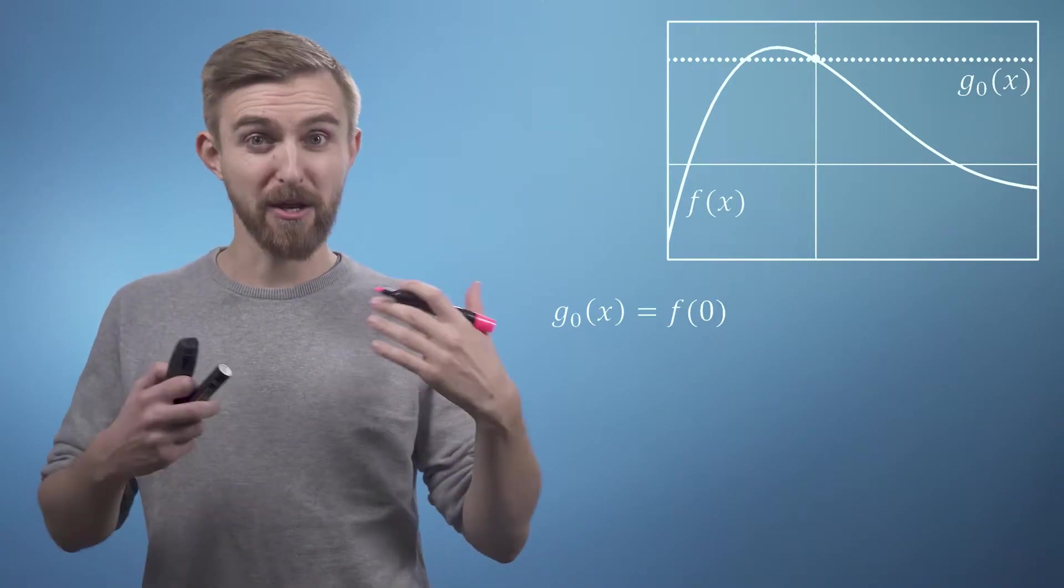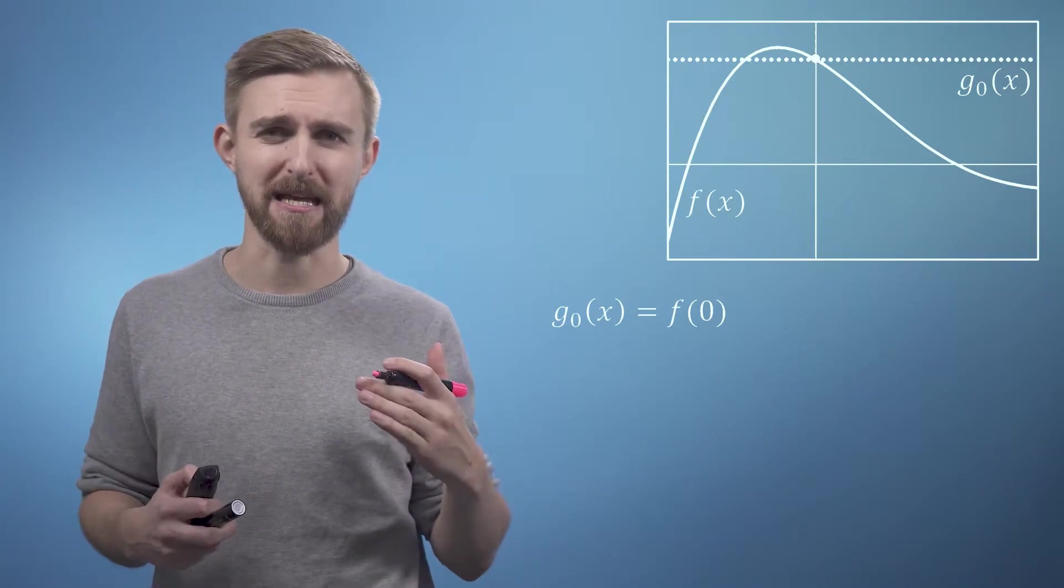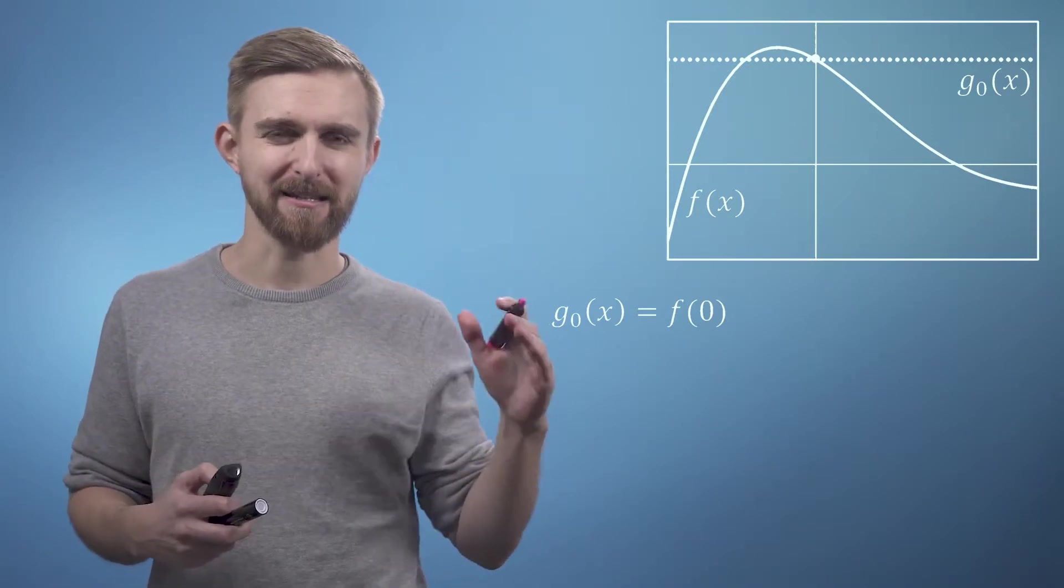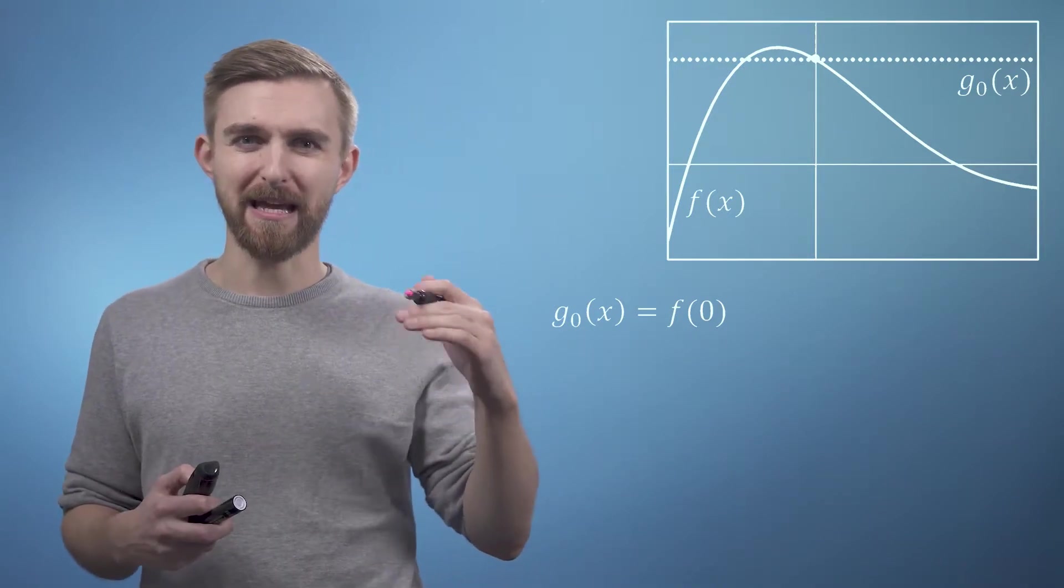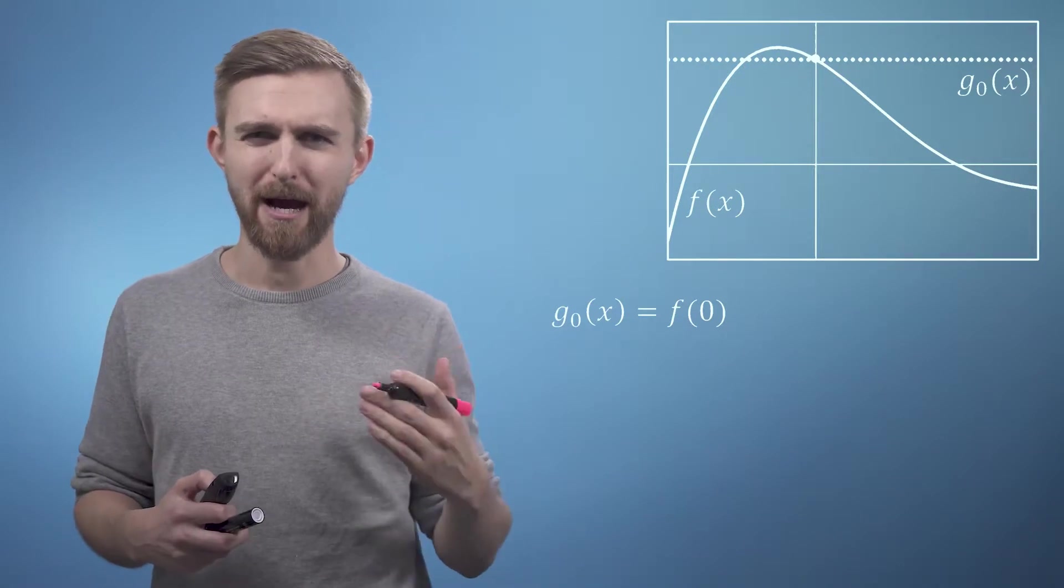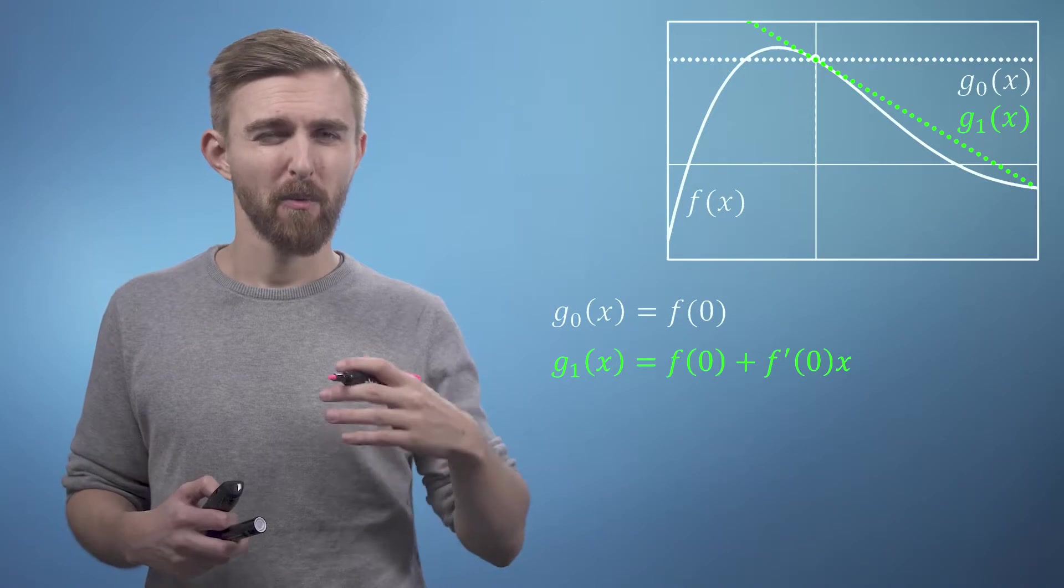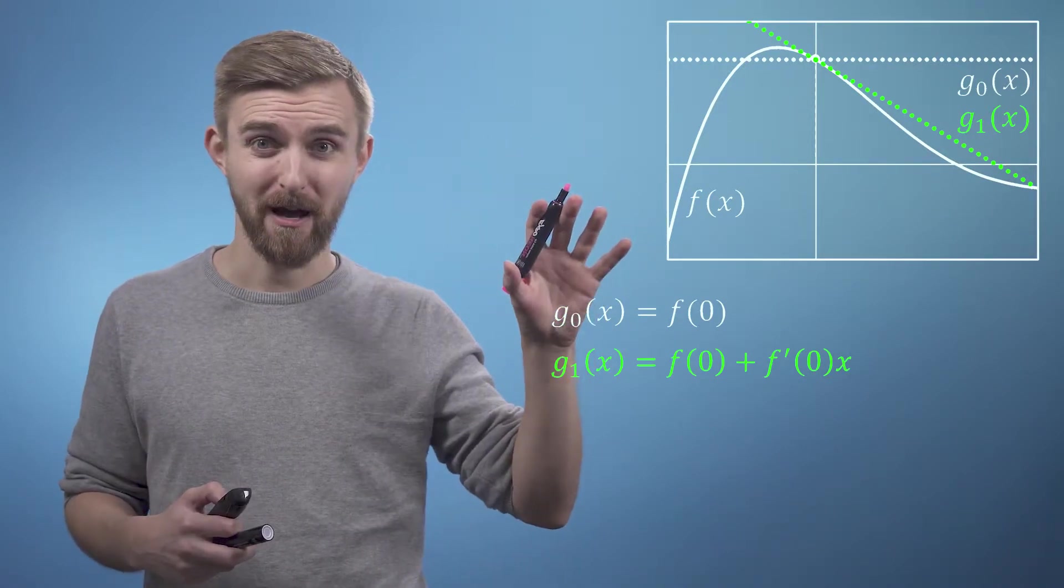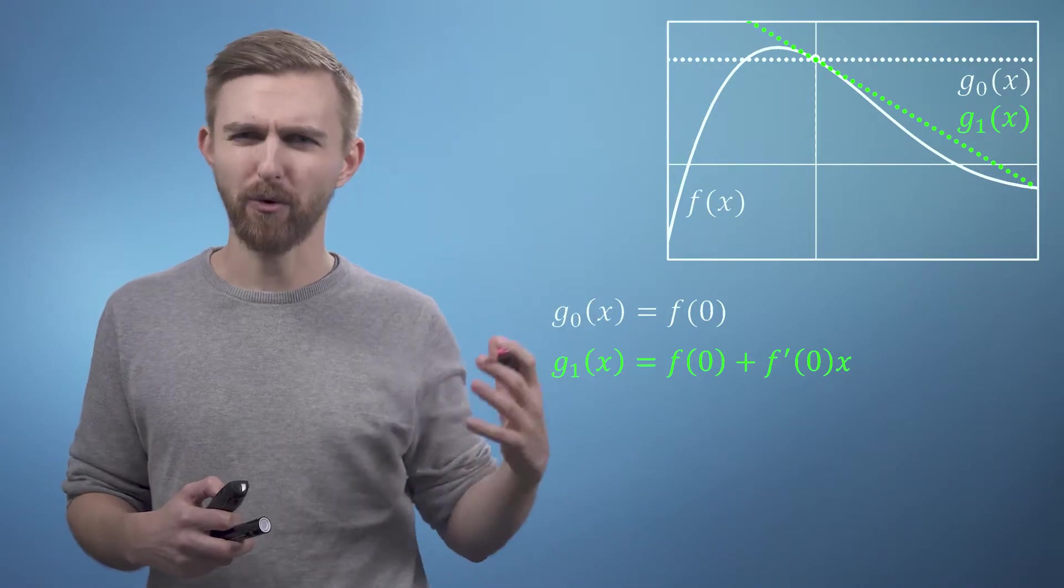Using these, we can build another straight line of the form y equals mx plus c, where the vertical axis intercept c is just f of 0, but just substituting in for f dash of 0 as the gradient of our line. So we can now plot our first order approximation to the function.